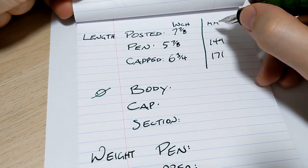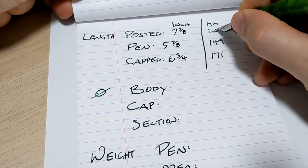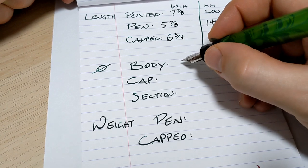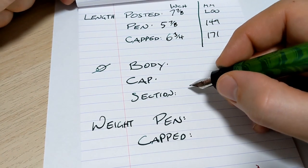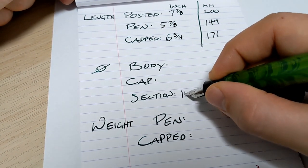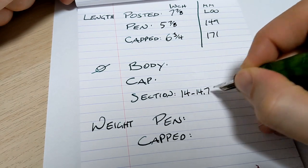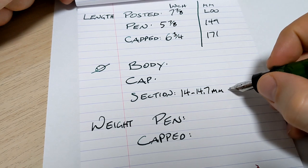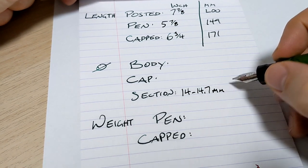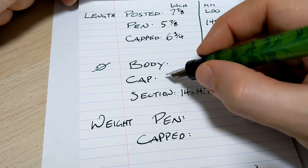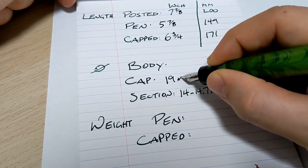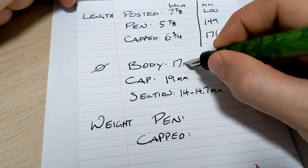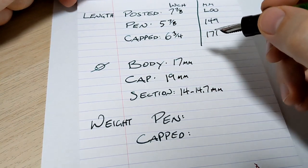As far as diameter, the main writing section varies from about 14 to 14.7 millimeters. In inches that's about nine sixteenths. The cap is 19 millimeters, so that's three quarters of an inch. And then the body is 17 millimeters, which is about I guess 11/16 or so.